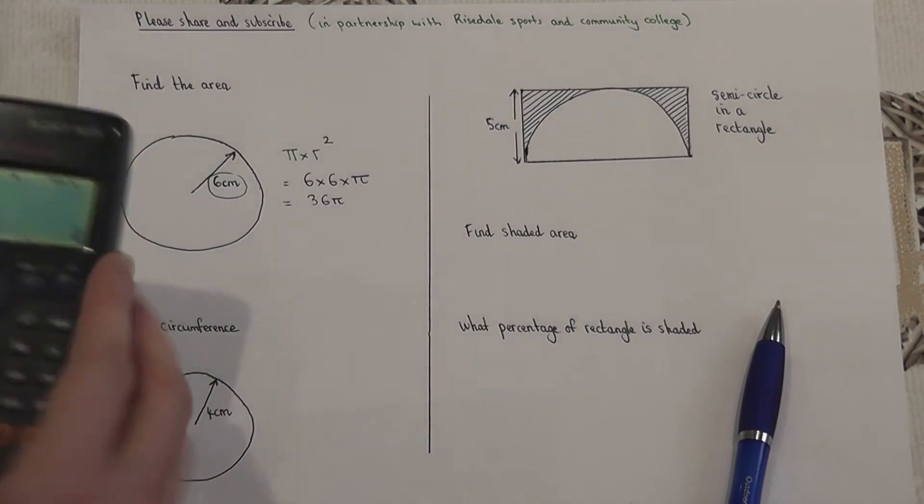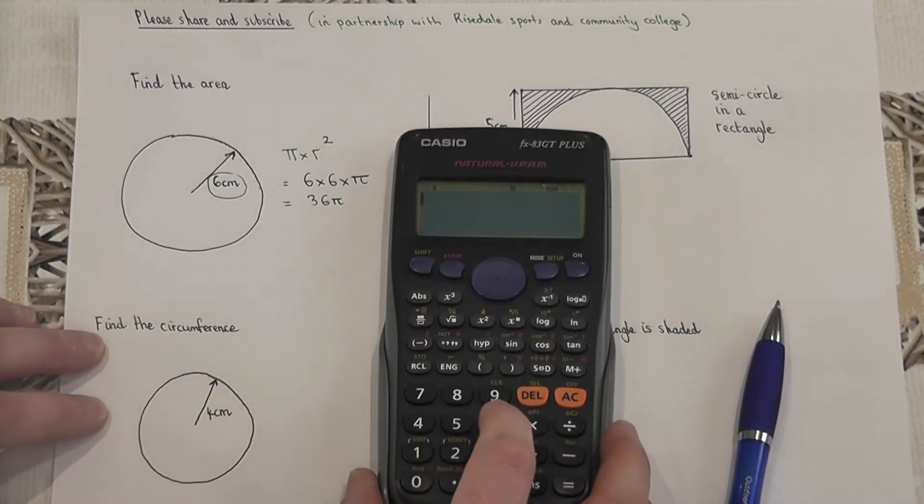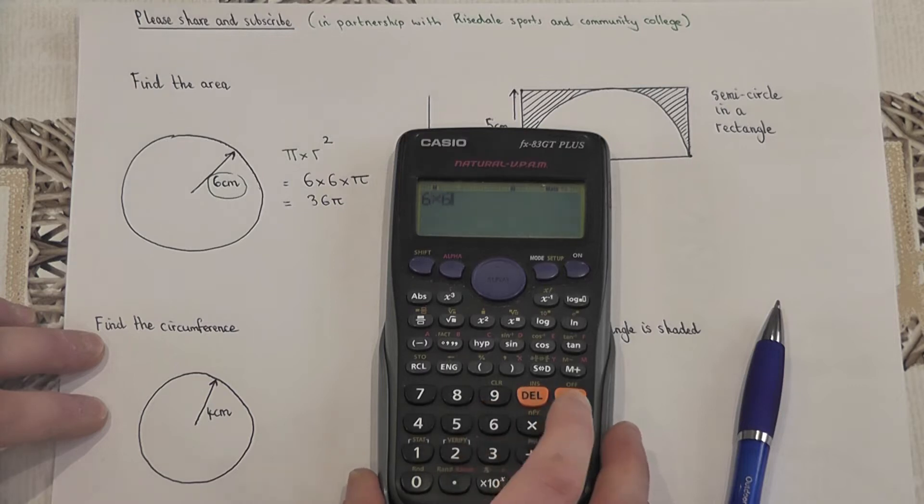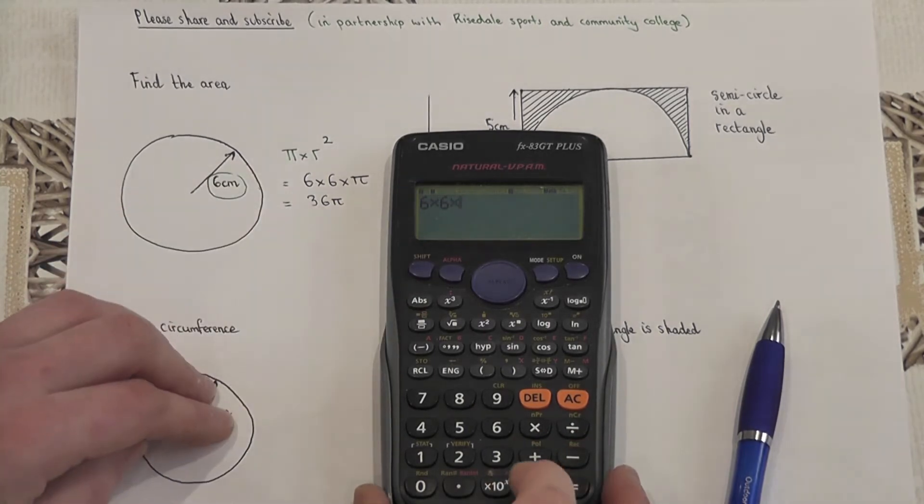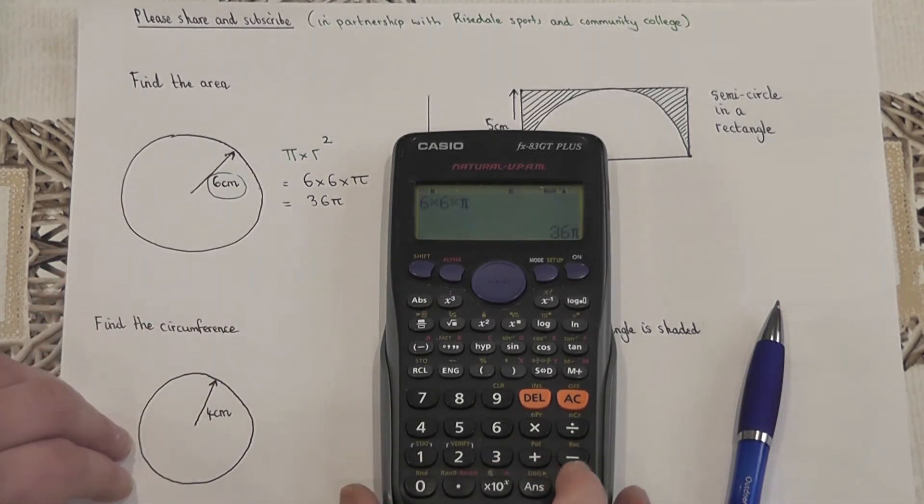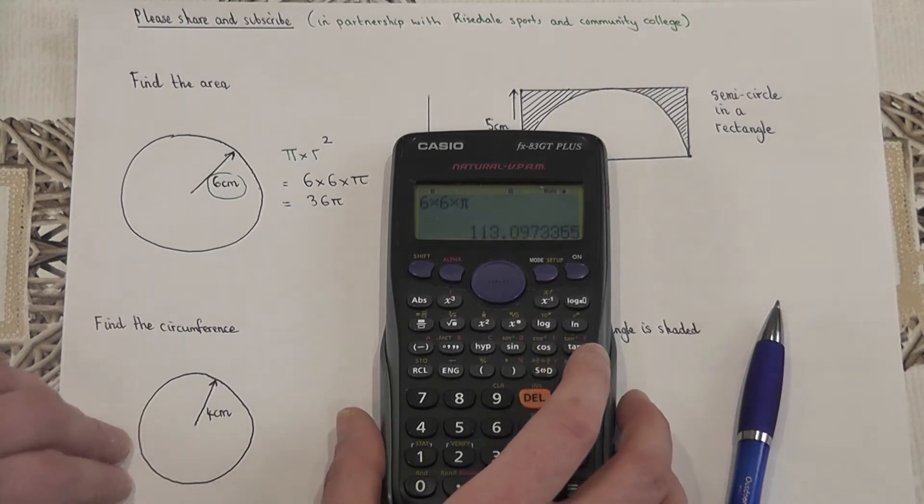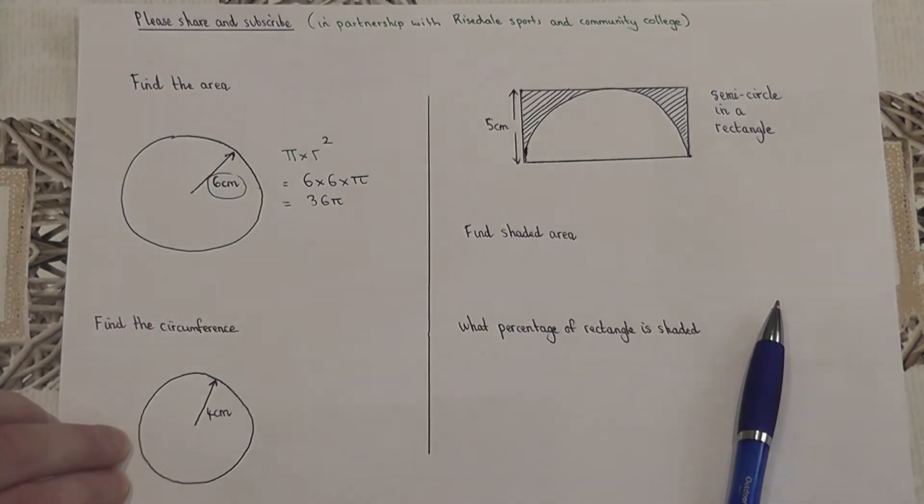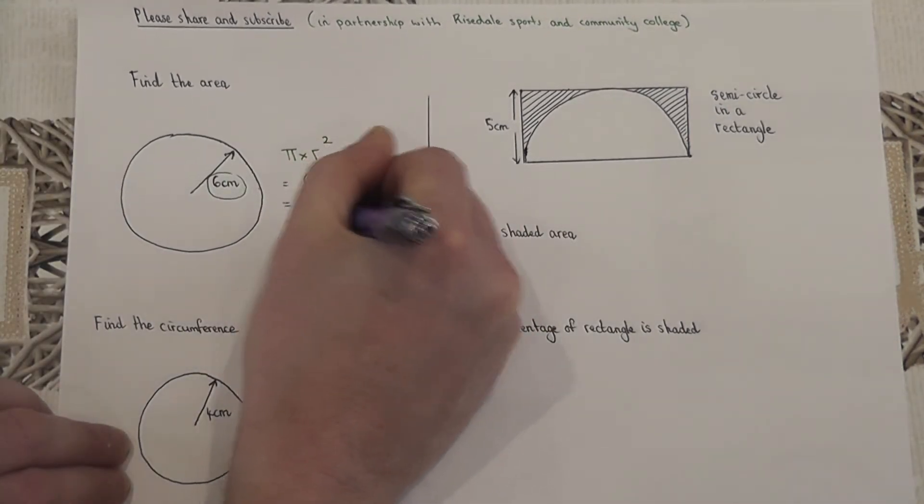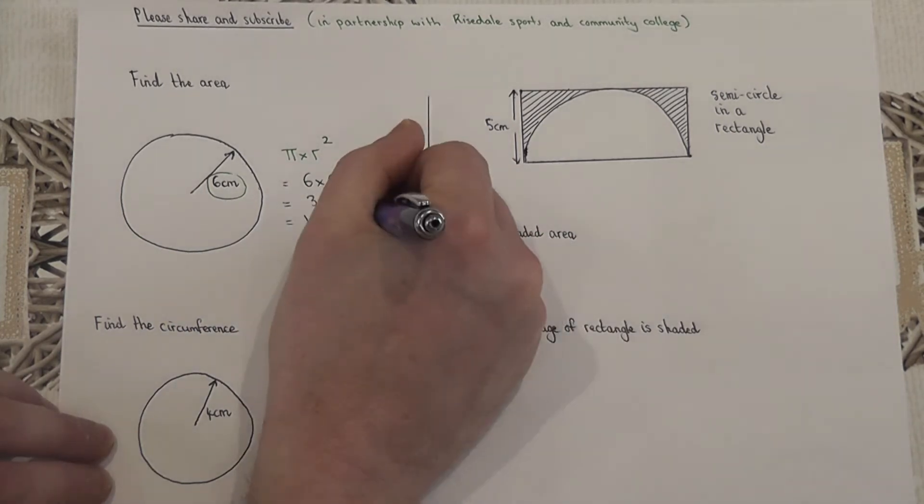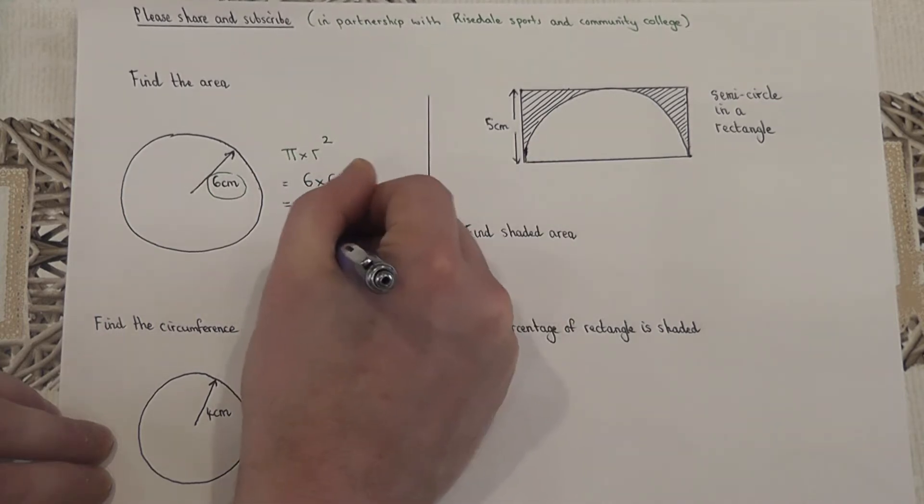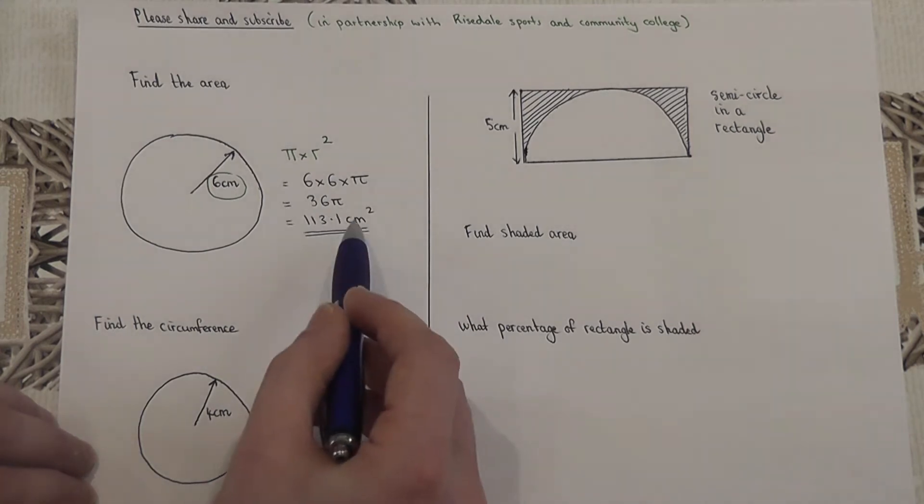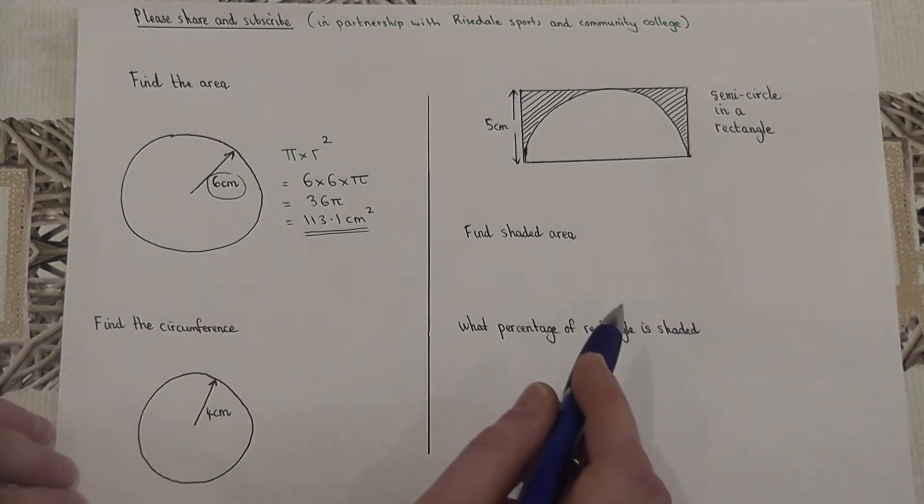However, if we do have a calculator, then we can do 6 squared or 6 times by 6 and then times this by pi. Pressing the SD button, we get 113.1 to one decimal place. Don't forget the units; this will be an area, so it's centimeters squared.